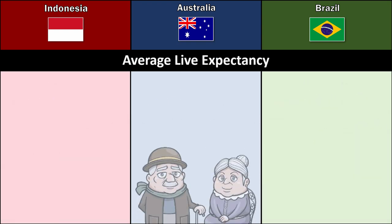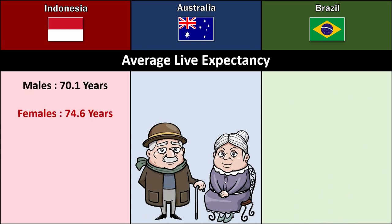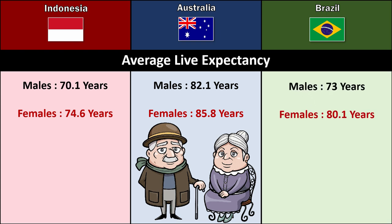Average Life Expectancy: Indonesia — Males 70.1 years, Females 74.6 years. Australia — Males 82.1 years, Females 85.8 years. Brazil — Males 73 years, Females 80.1 years.